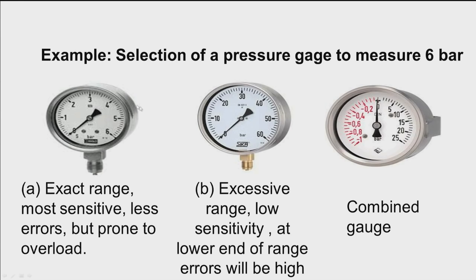So selecting a pressure gauge with a 0 to 25 bar range will be appropriate. Sometimes we need to measure both pressure and vacuum, in which case we need to select combined gauges.